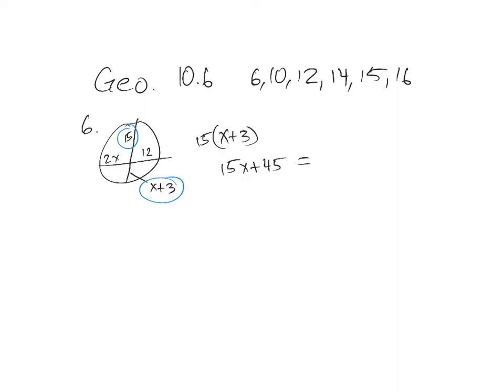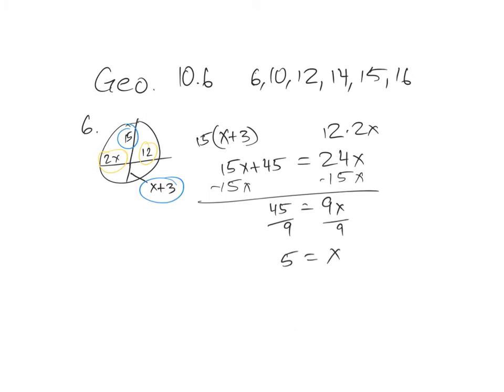So x plus 3, and we're going to multiply it by 15, and we'll get 15x plus 45. And that's going to be equal to the 12 times 2x. So 12 times 2x, that's 24x. Now we solve the problem. So I'm going to subtract 15x to the right, and I get 45 equals 24 minus 15 is 9x. Divide off the 9, and 5 equals x.